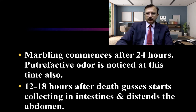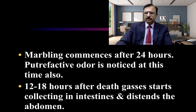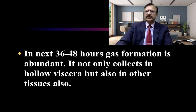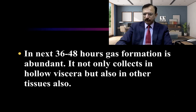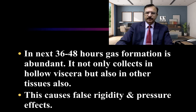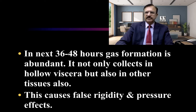Simultaneously, processes going on inside the body include accumulation of gases in 12 to 18 hours. These gases first collect in the intestines and distend the abdomen. In the next 36 to 48 hours after death, gas formation is abundant and it not only collects in the hollow viscera but also in other tissues of the body. This causes false rigidity and a pressure effect, and because of the pressure effect there is expulsion of contents emitted out of the mouth, nostrils, and feces through the rectum.